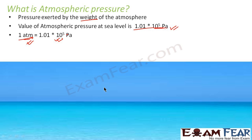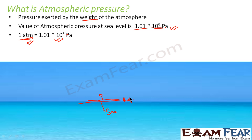Just to visualize it, consider this is the sea. The sea level is taken as the reference. Below and above this sea level, atmospheric pressure will be measured with respect to the value at this level. So at the sea level, the atmospheric pressure is 1 atmosphere.